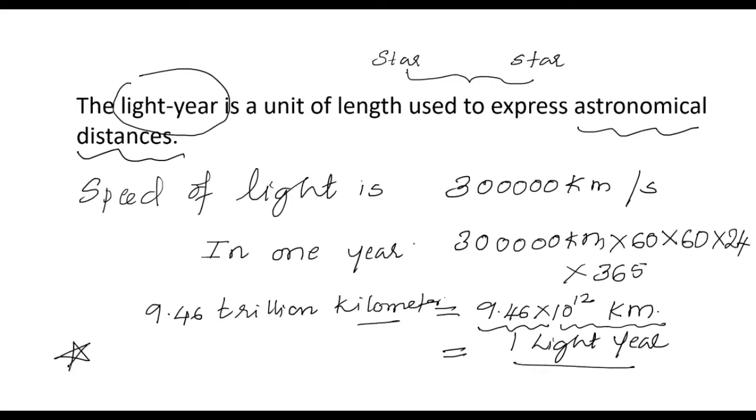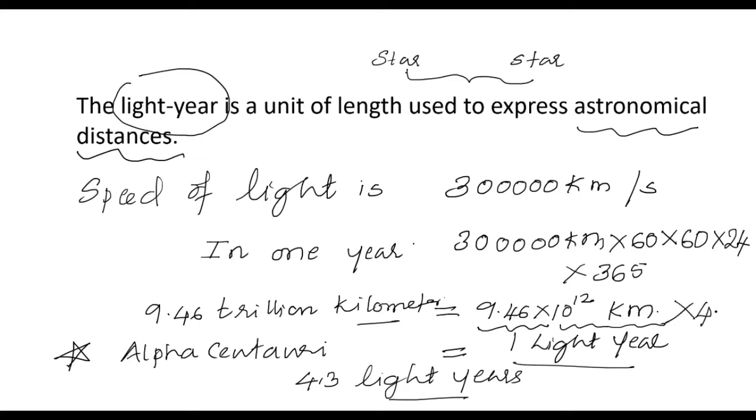There is a star called Alpha Centauri, and that star is 4.3 light years away from us, and what does it mean? One light year is 9.46 into 10 raised to 12. You have to multiply this number by 4.3 and whatever number you get, that is the distance in kilometers between Alpha Centauri and Earth. Alpha Centauri is the nearest star to the Earth other than the Sun. Sun is the nearest one. Other than Sun, this Alpha Centauri is the nearest one, which is 4.3 light years. What does it mean? A light takes 4.3 years to reach the Earth from the star.